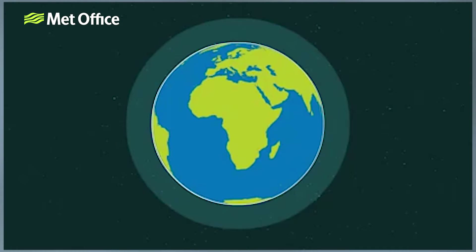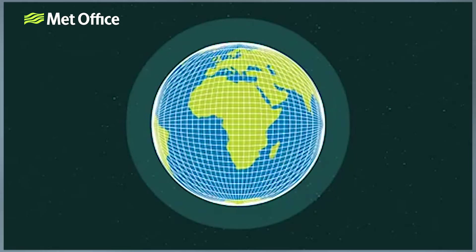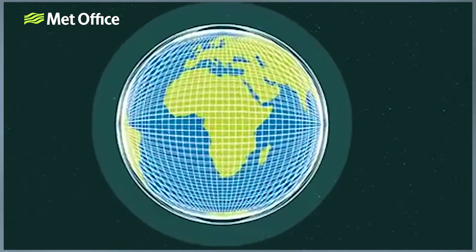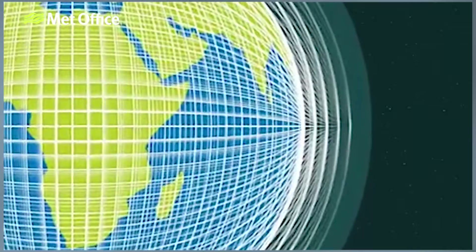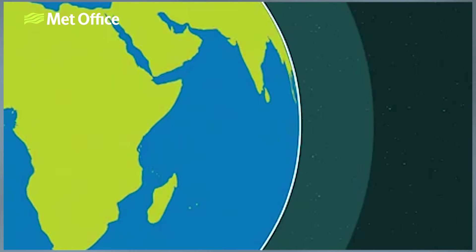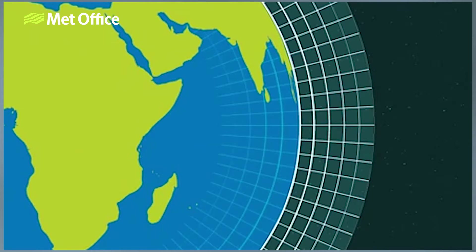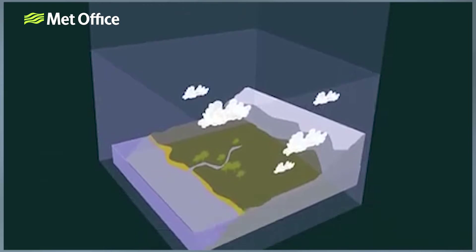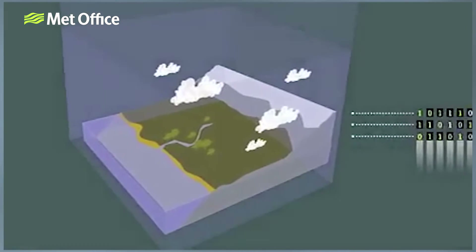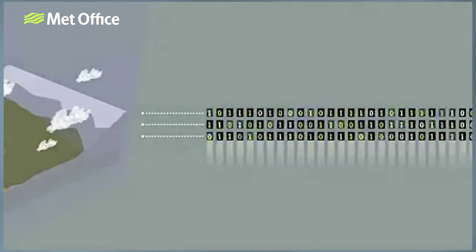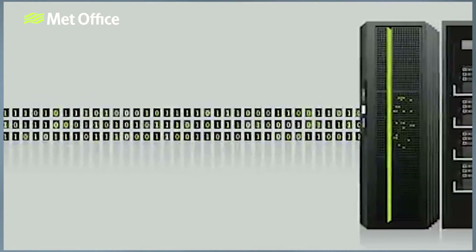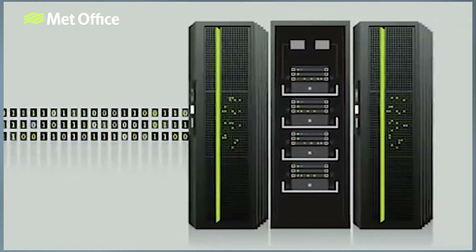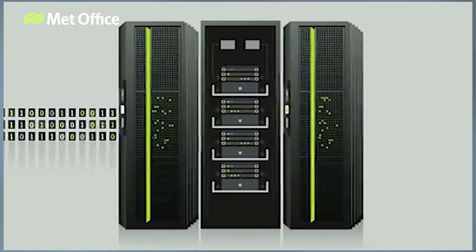To do this, the models use a three-dimensional grid which covers the entire globe, starting at the bottom of the oceans all the way to the top of the atmosphere. This can be imagined as many thousands of cubes or grid boxes on and above the Earth's surface and beneath the oceans. The model solves mathematical equations that describe basic physical processes to predict how the atmosphere and ocean in each grid cell evolves with time, as well as describing how each grid box interacts with its neighboring cells.